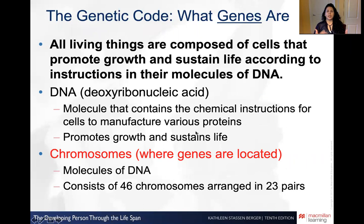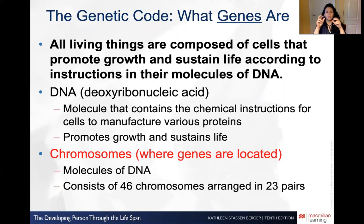First of all, let's look at genetics and your genes. All living things are composed of cells, and our DNA is really this kind of code — instructions, if you will — that help us to develop into the person that we are. Our chromosomes are where our DNA is located. Most of us are made up of 46 chromosomes: 23 pairs of two for a total of 46.